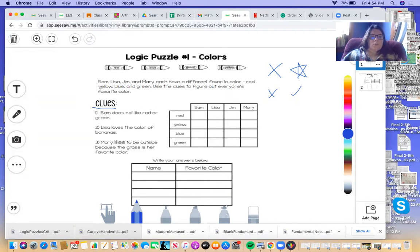So let's read our instructions. It says, Sam, Lisa, Jim, and Mary each have a different favorite color: red, yellow, blue, and green. Use the clues to figure out everyone's favorite color.